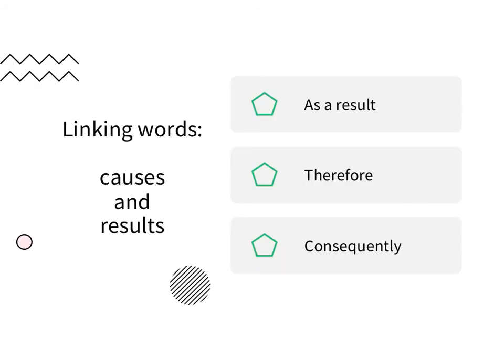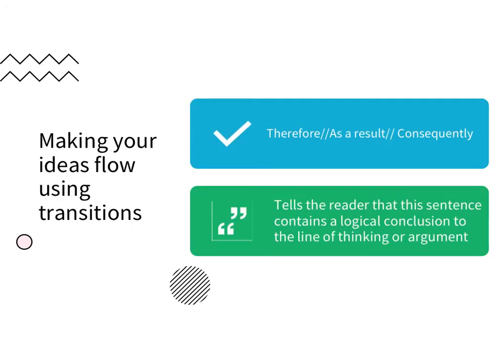Transition words help you connect the ideas in a sentence. In this video, we will focus on some common transition words to express causes and results. They are: as a result, therefore, and consequently. These words are more formal and are more commonly used in written English. By using these transition words, you can tell the readers that this sentence contains a logical conclusion to the line of thinking or arguments.